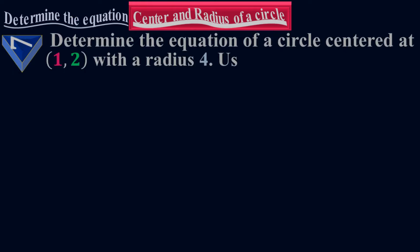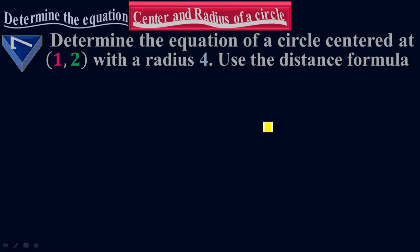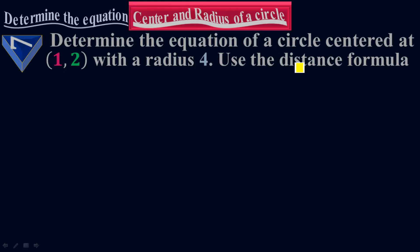Example number 7. Determine the equation of a circle centered at 1,2 with a radius 4. Use the distance formula. The statement says that you have to determine the equation of the circle which is centered at 1,2 with a radius 4, but this time you're going to use the distance formula. Don't use the direct equation of the circle.